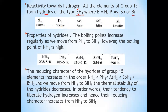All elements of this group show positive oxidation states of plus three and plus five. On moving down the group, the stability of plus five decreases and the stability of plus three increases, due to the inert pair effect — that is, the non-participation of ns electrons in bond formation.